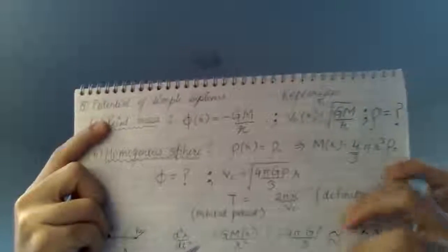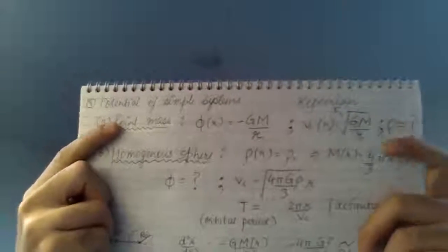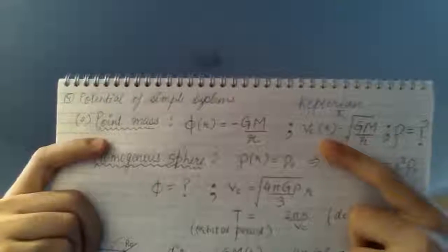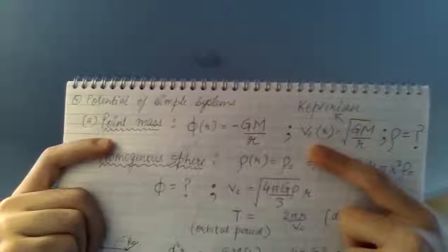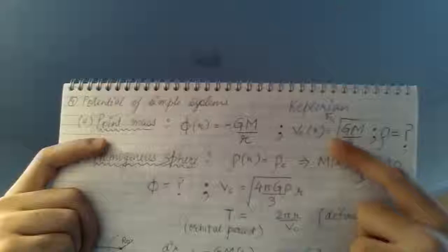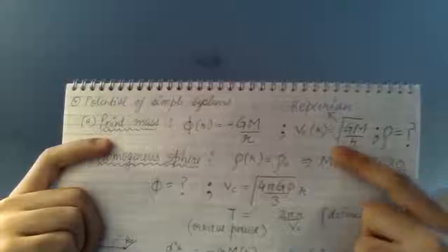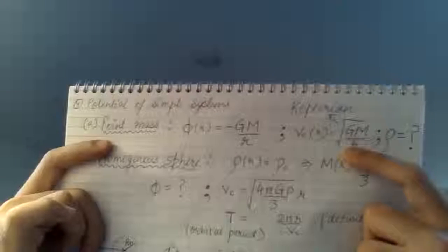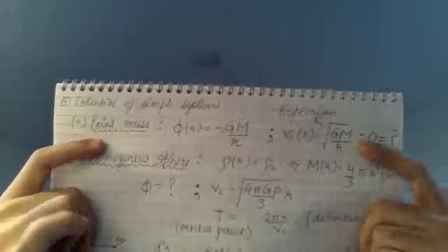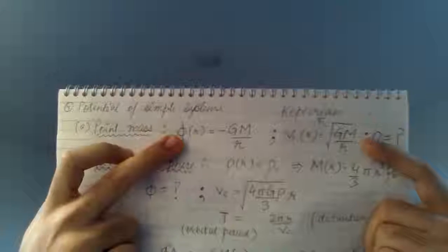Now let's study some applications of circular velocity. For a point mass, the gravitational potential is Φ = -G/r. Using the circular velocity formula, you get v_c ∝ 1/√r, which is the Keplerian velocity curve — the same result Kepler observed for planets revolving around the Sun. As an exercise, you can try to calculate the density using the Poisson equation given this potential.